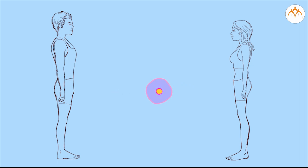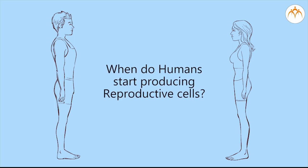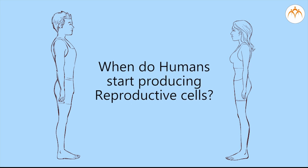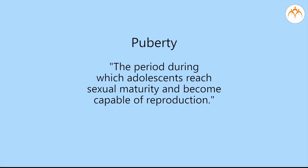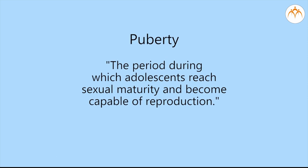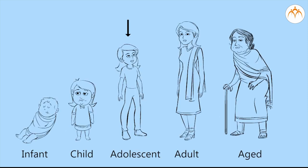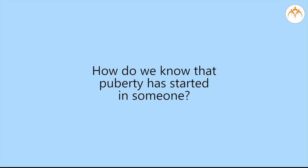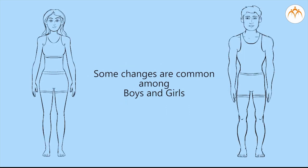Male and female individuals produce haploid gametes, namely sperms and ova. The gametes unite to form a zygote and later the embryo. Humans start producing gametes on attaining sexual maturity or puberty. In females and males, there are some bodily changes that occur on the onset of puberty. Those changes are as follows.